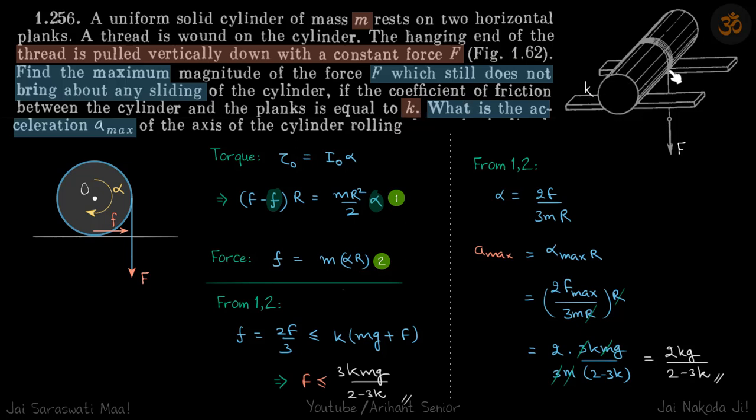We have a solid cylinder which has been pulled down with a force F, and the surface is rough. We need to find the maximum value of F such that there is pure rolling, and what will be the a_max of the axis of the cylinder.